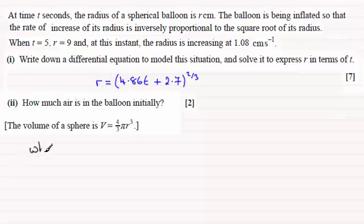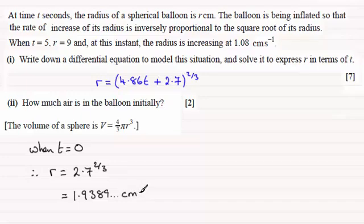Starting off then by saying when t equals naught. When t equals naught we therefore have the radius r substituting it into here. It's just going to be 2.7 to the power two thirds. So doing this on your calculator, cube root of 2.7 then squaring your answer gives you 1.9389 and so on centimetres. So that's the initial radius.